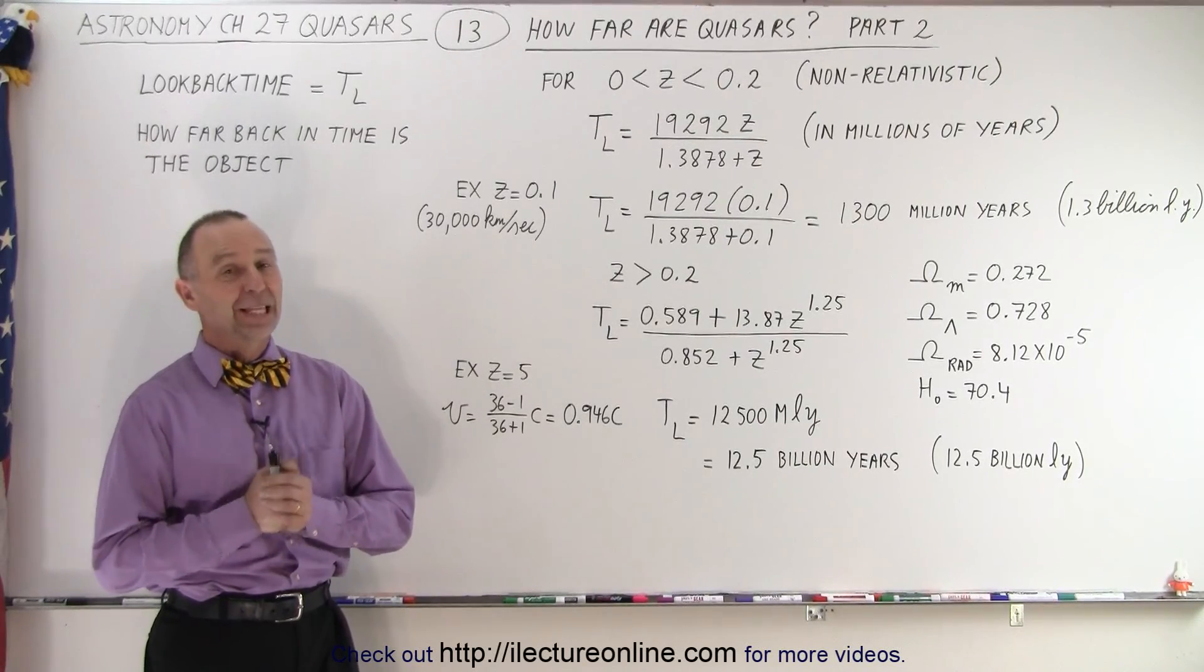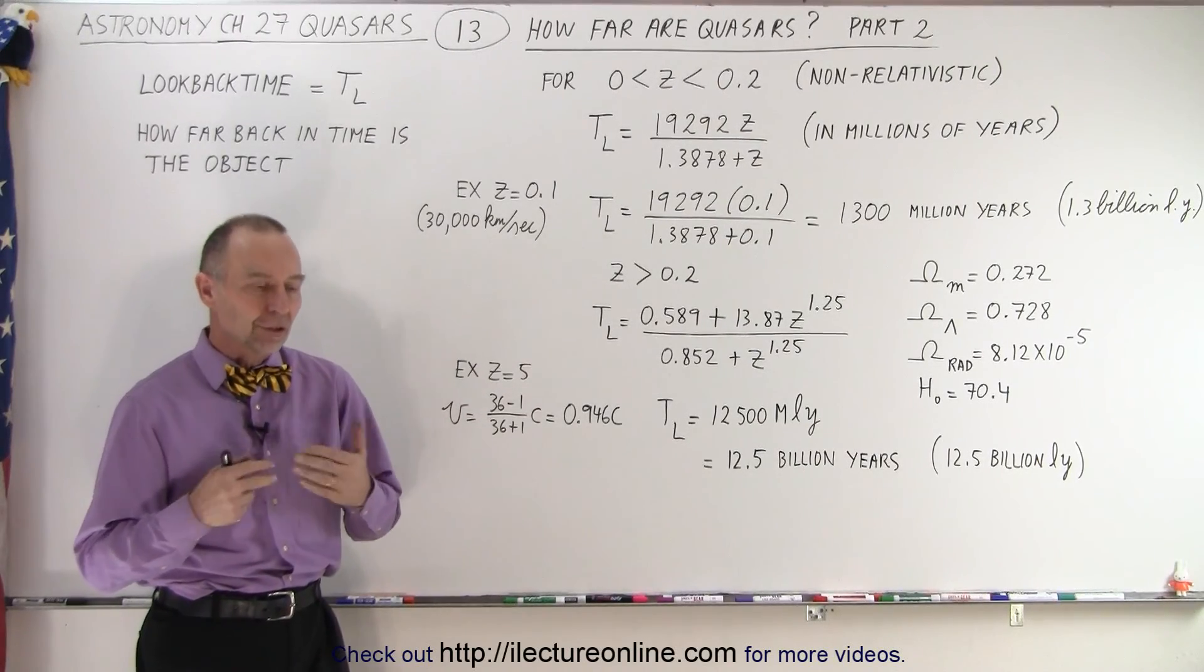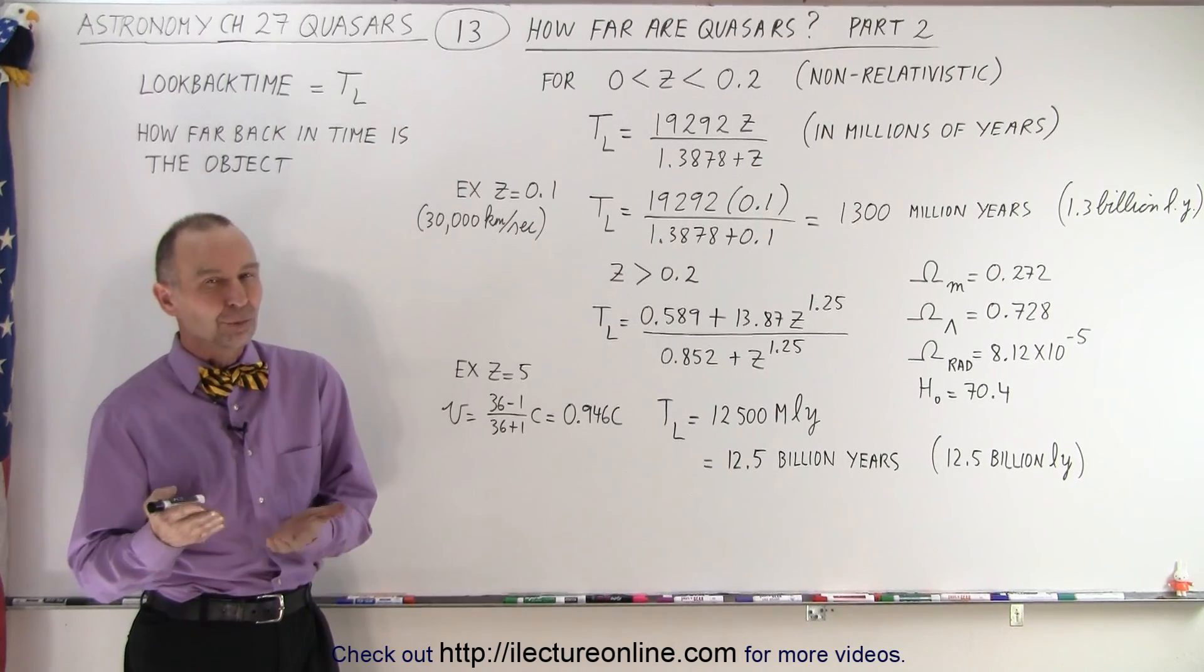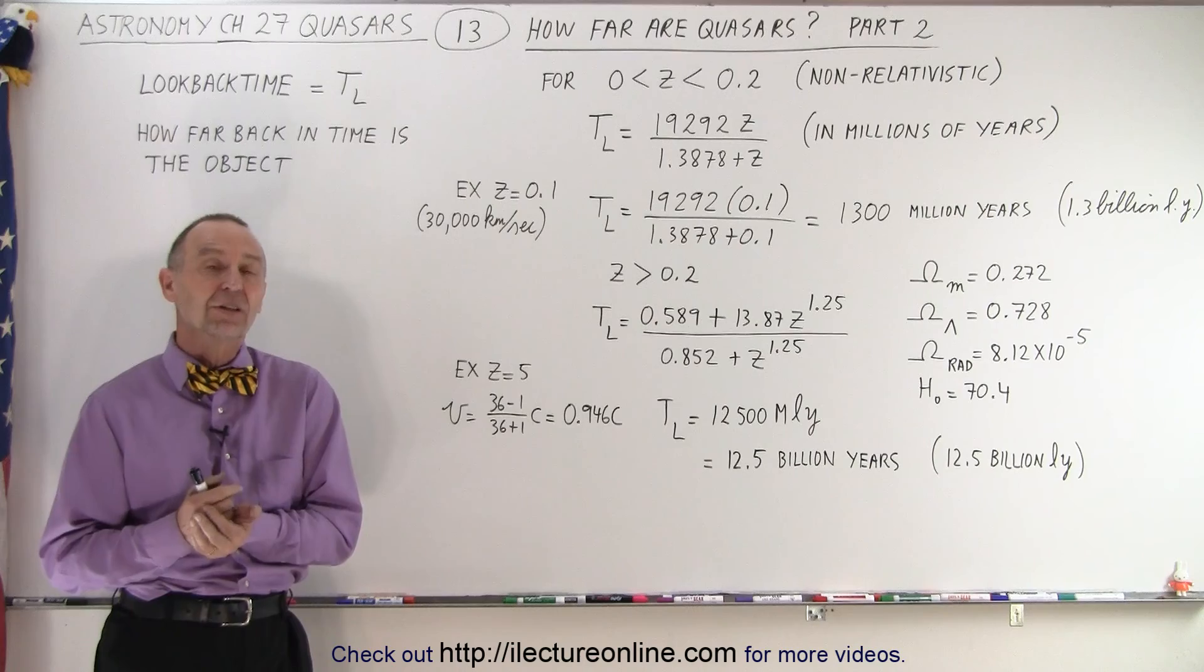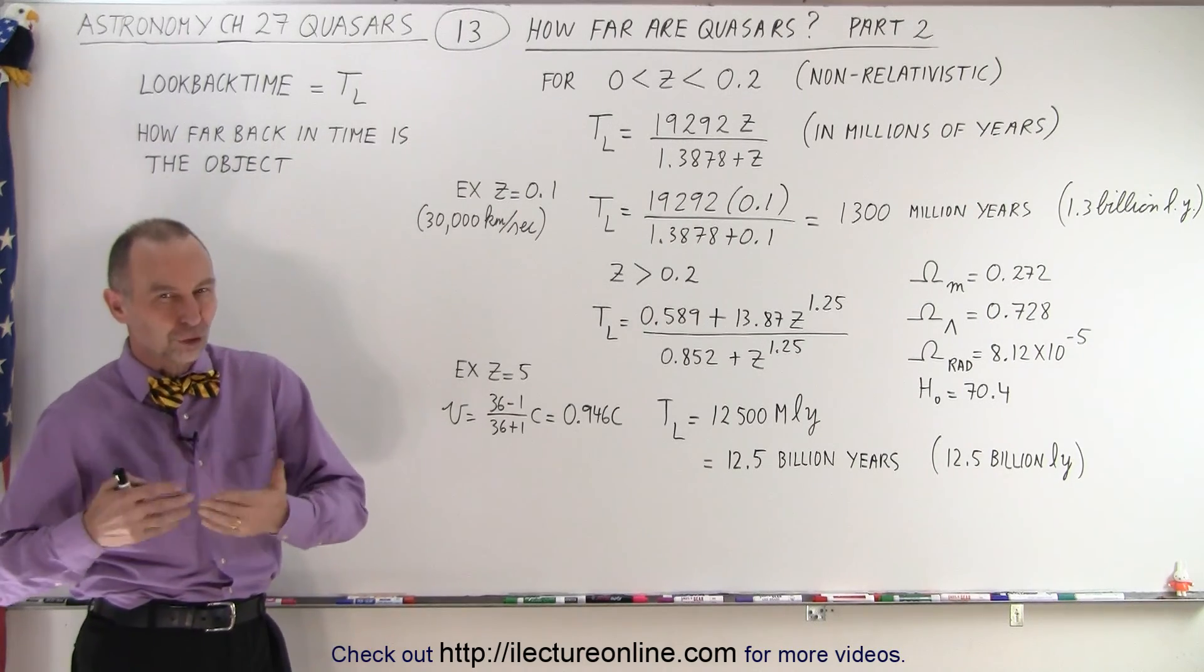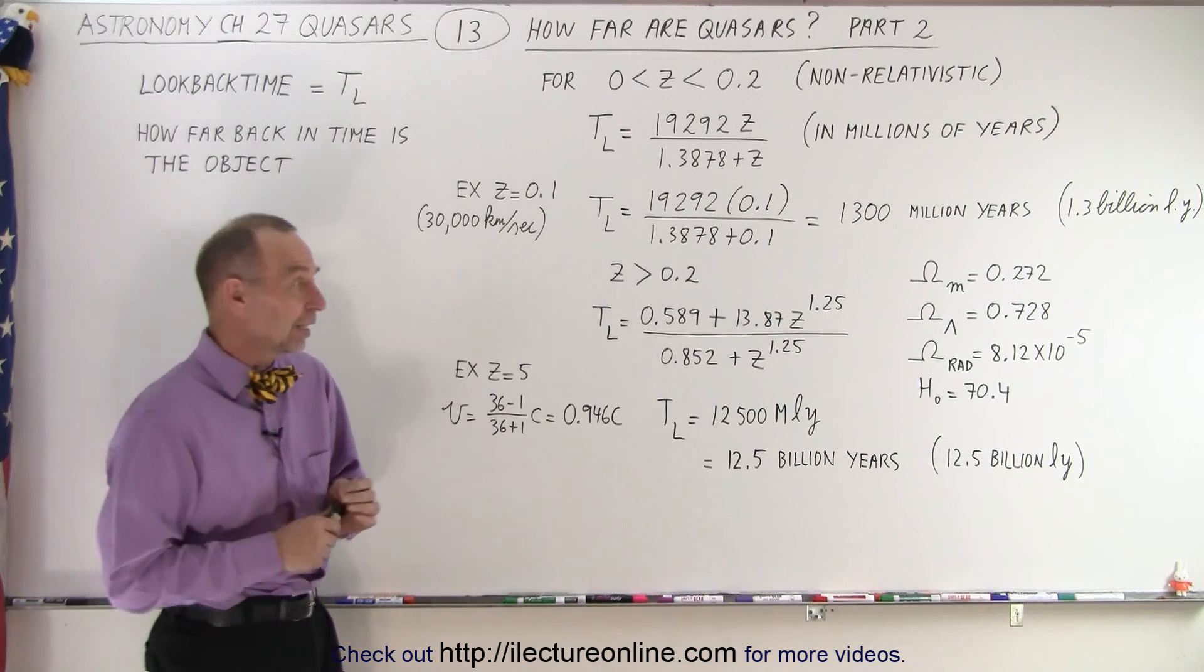Welcome to ElectronLine. In the previous video, we saw that we could talk about distances to faraway objects like quasars in terms of their recessional velocities or in terms of their redshift, in terms of z. And we understood how to calculate z, because we've seen that in the previous video.